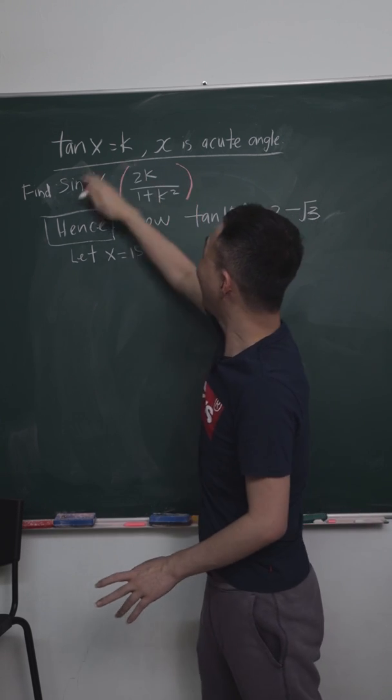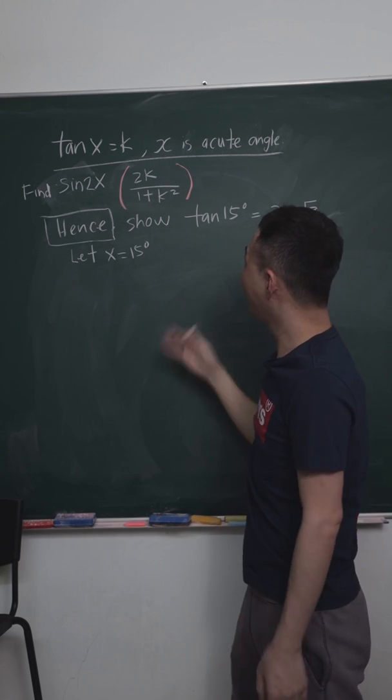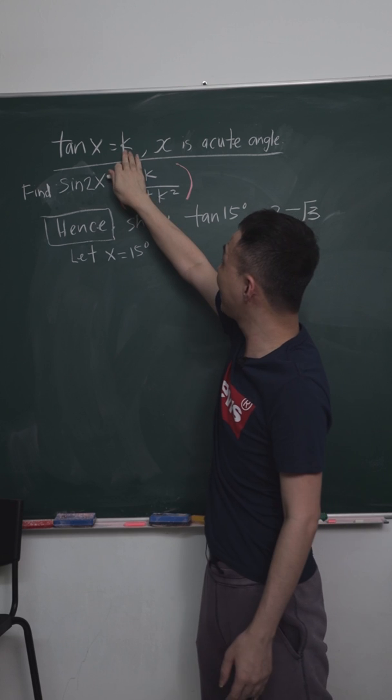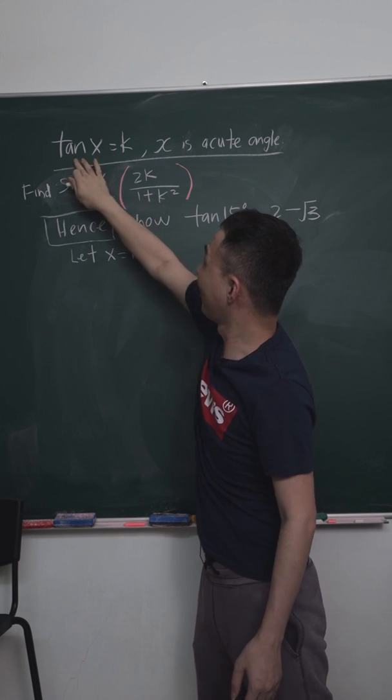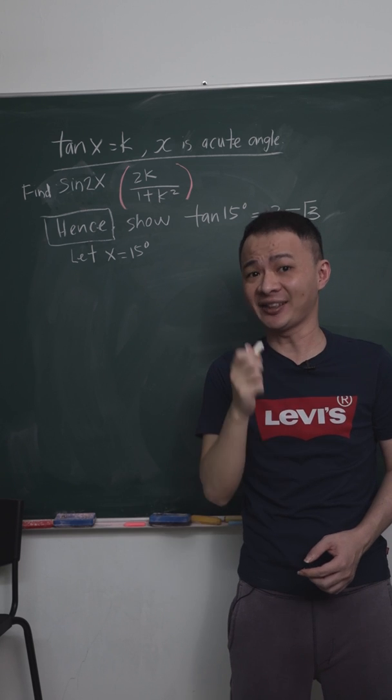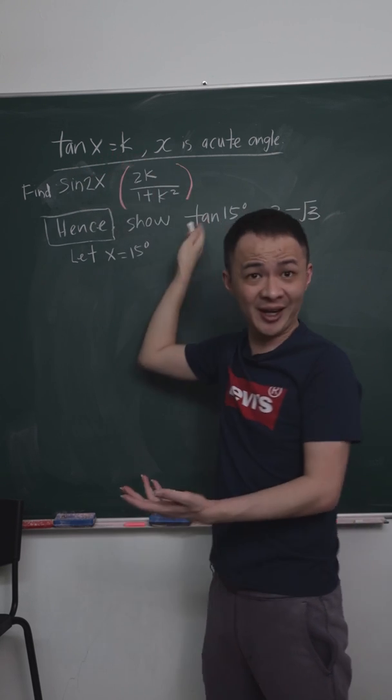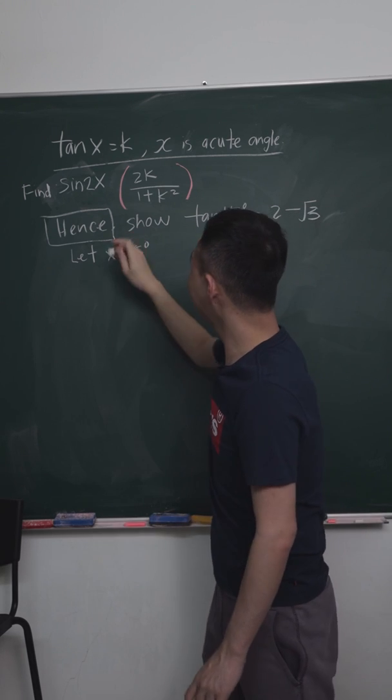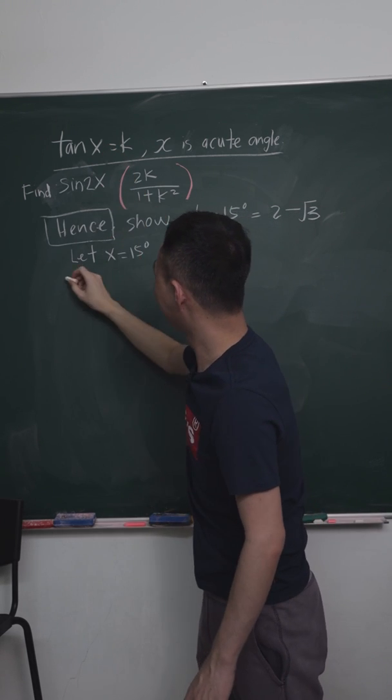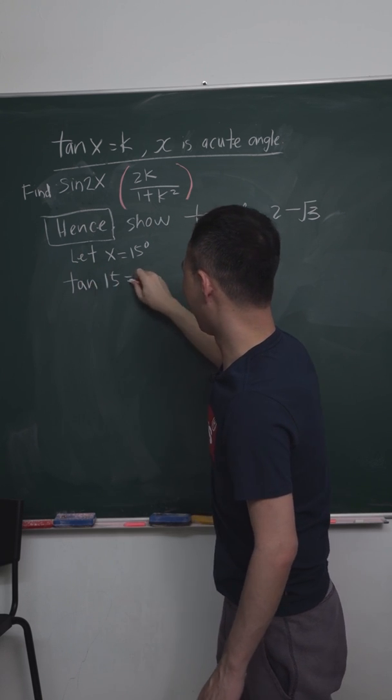Then we might be able to get a quadratic equation from k here. Because we understand k basically equals tangent x. So if I let x equals 15, at the same time I tell the examiner, this one is tangent 15 equals k. You get the idea? So first thing is, I sub the x into the tangent, then I will get tangent 15 equals k.